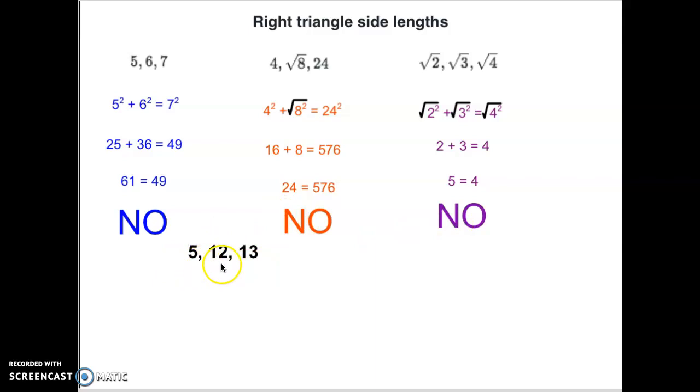And that problem will be 5, 12, and 13. Let's say that was my example problem. So I will take 5 squared plus 12 squared equals 13 squared. Well, 5 squared is 25. 12 squared is 144. And 13 squared is 169. 25 plus 144 is 169. The two sides do match. So yes, that one would work right there. So I did give you one that finally worked there.